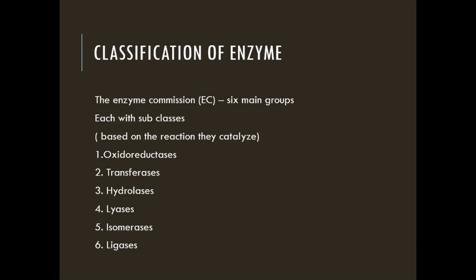The six groups are: first, oxidoreductases, which catalyze the transfer of electrons, hydride, or hydrogen atoms; second, transferases, which catalyze group transfer reactions; third, hydrolases, involved in hydrolysis reactions and transfer of functional groups to water; fourth, lyases, which catalyze addition of groups to double bonds or formation of double bonds by removal of groups; fifth, isomerases, catalyzing isomerization reactions; and sixth, ligases, involved in formation of bonds by condensation reactions using ATP, mainly C-O-S, C-O-C, C-O-O, and C-O-N bonds.